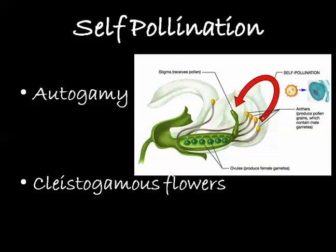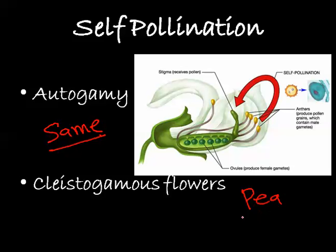In the first process, self-pollination or autogamy, the pollen from the anther falls on the stigma of the same flower. The pollen falls on the same stigma — it is not moved outside and doesn't fall on any other flower. This type of pollination is called autogamy. Common examples are peas, rice, and wheat — all these plants undergo this type of self-pollination.